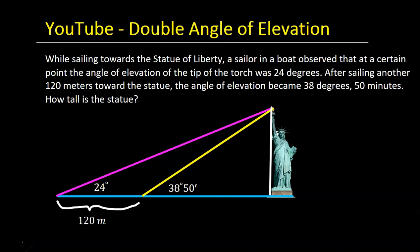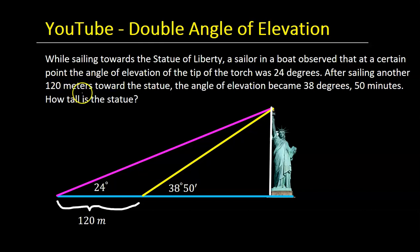In this video, we will do a request from the comments section involving a double angle of elevation. While sailing towards the Statue of Liberty, a sailor in a boat observed that at a certain point the angle of elevation of the tip of the torch was 24 degrees. After sailing another 120 meters towards the statue, the angle of elevation became 38 degrees 50 minutes. How tall is the statue?